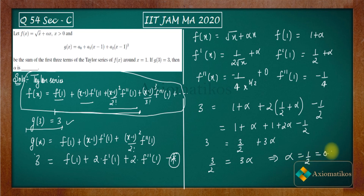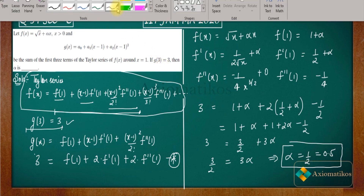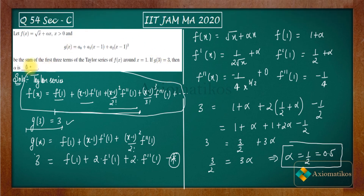So the answer for this question is alpha = 0.5. If you have any doubt or query regarding this problem you can always ask in the comment section below. We have also provided links for WhatsApp and Telegram groups where you can post your problems. Thank you.